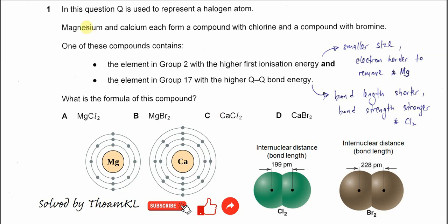Question 1. In this question, Q is used to represent a halogen atom. Magnesium and calcium each form a compound with chlorine and a compound with bromine.